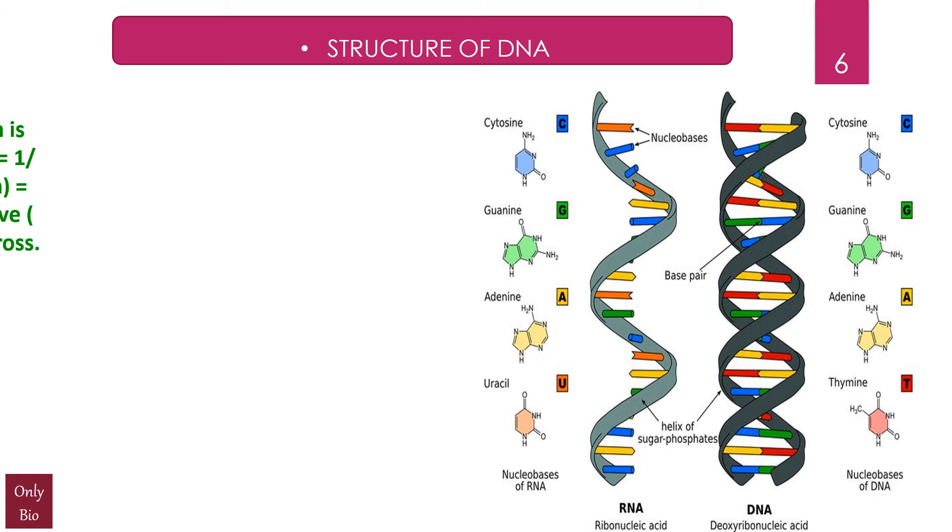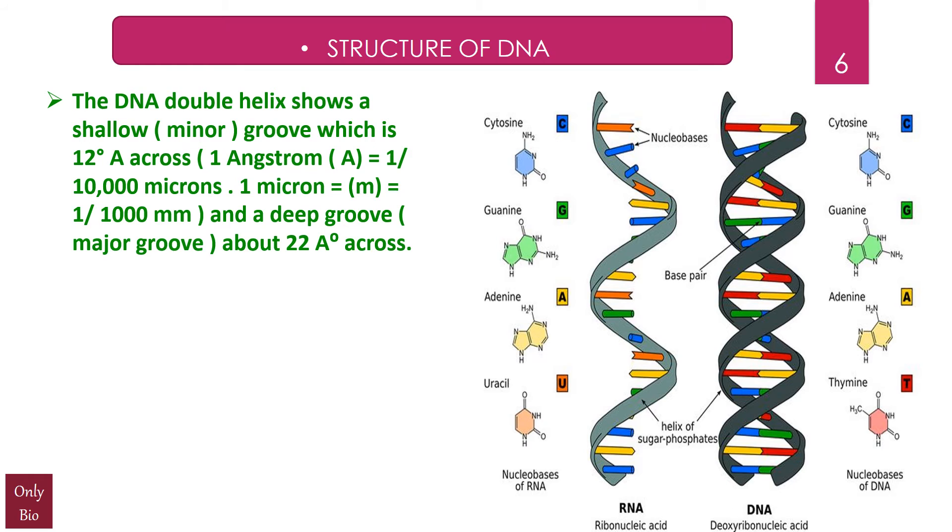Friends, you can see again the DNA strand which has been beautifully depicted here, and you can also see an RNA strand just to compare with it. The DNA double helix shows a shallow, that is minor groove, which is 12 Angstrom units, and the deep groove, that is major groove, which is 22 Angstrom units across. Friends, one Angstrom unit is 1/10,000 microns, and one micron is equal to 1/1000 millimeters.